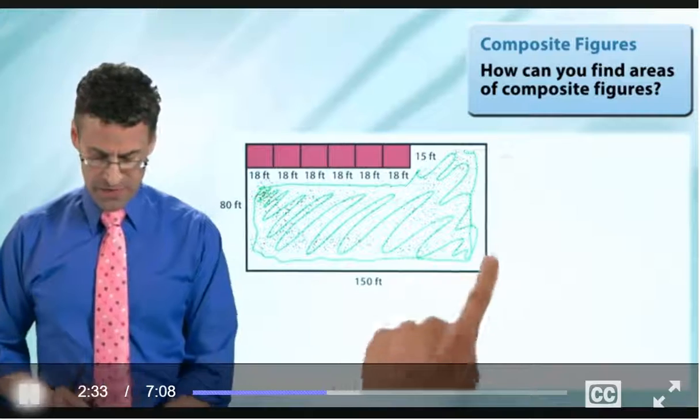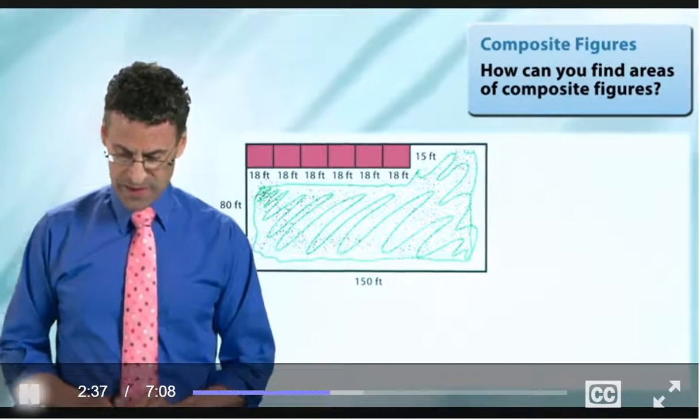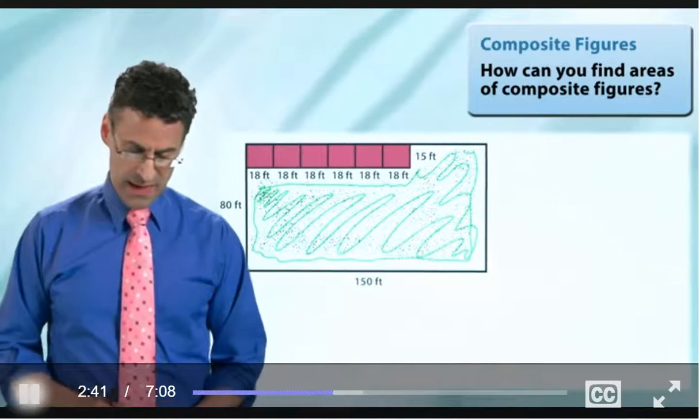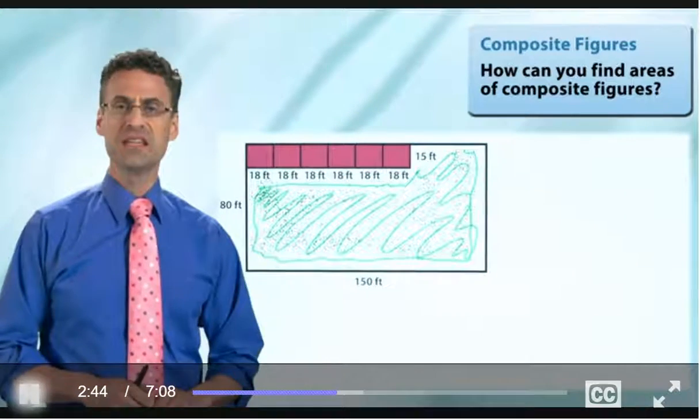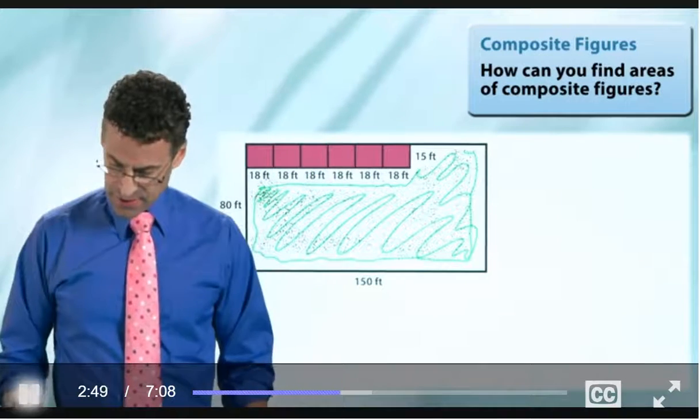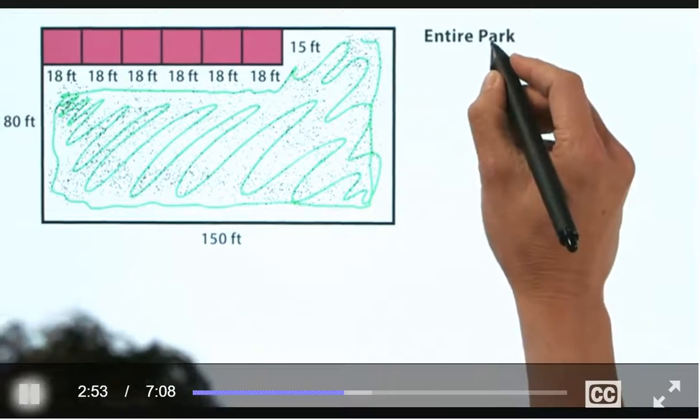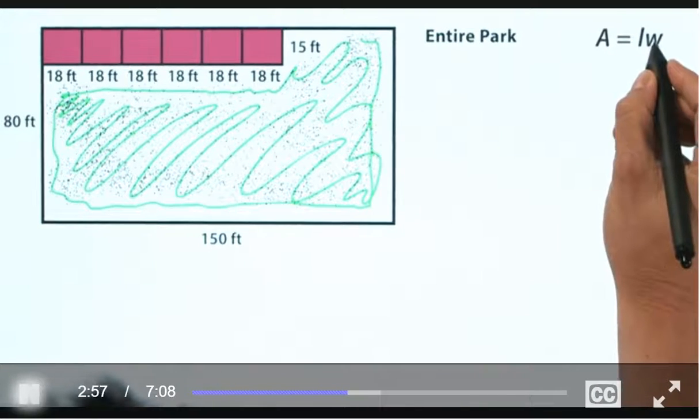Okay, so let's start off with the big area. So the entire park. So what is the area of the entire park? Well, of course, the area of any rectangle is length times width. That's always the case. So the question is, what is the length? What is the width?